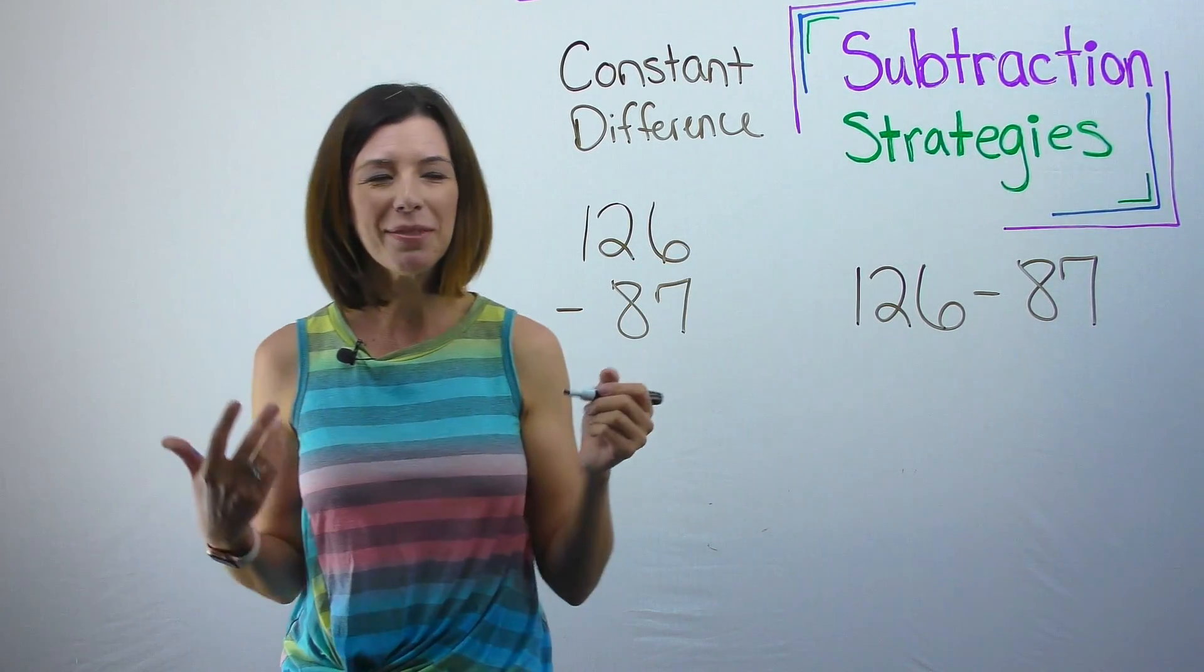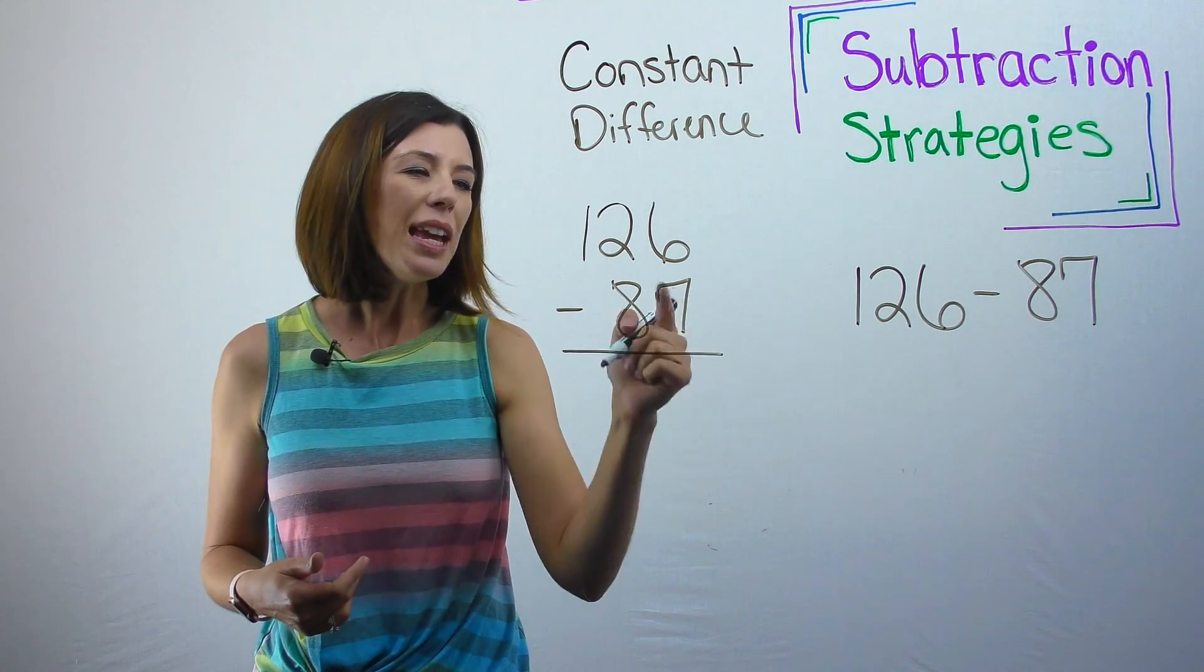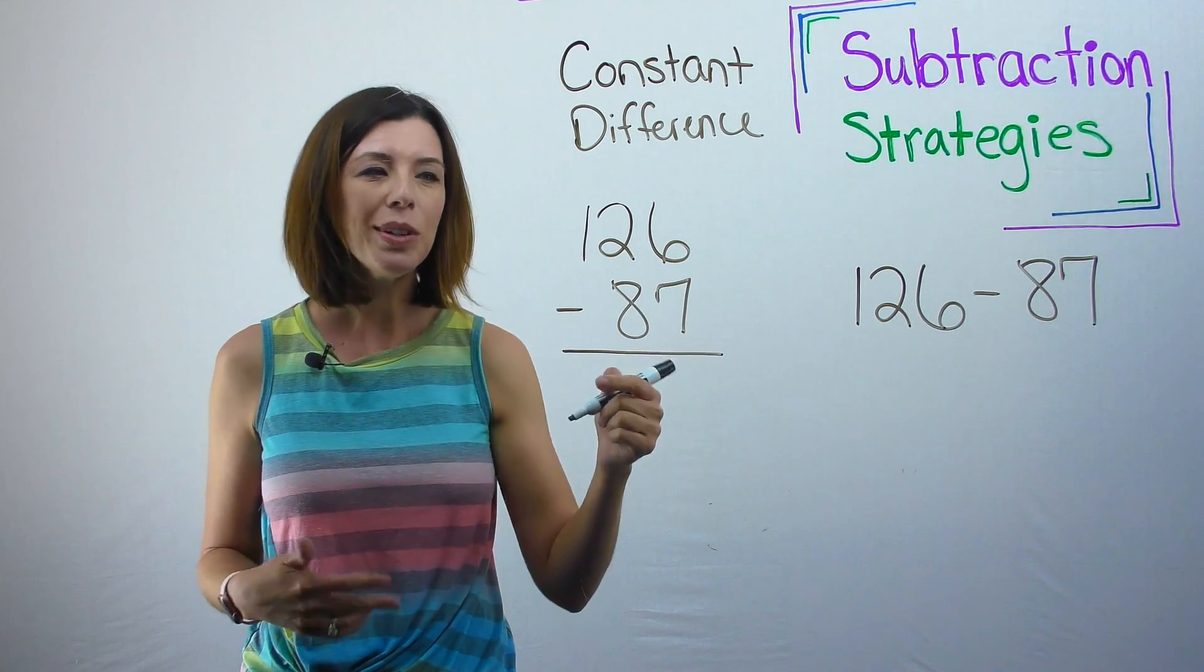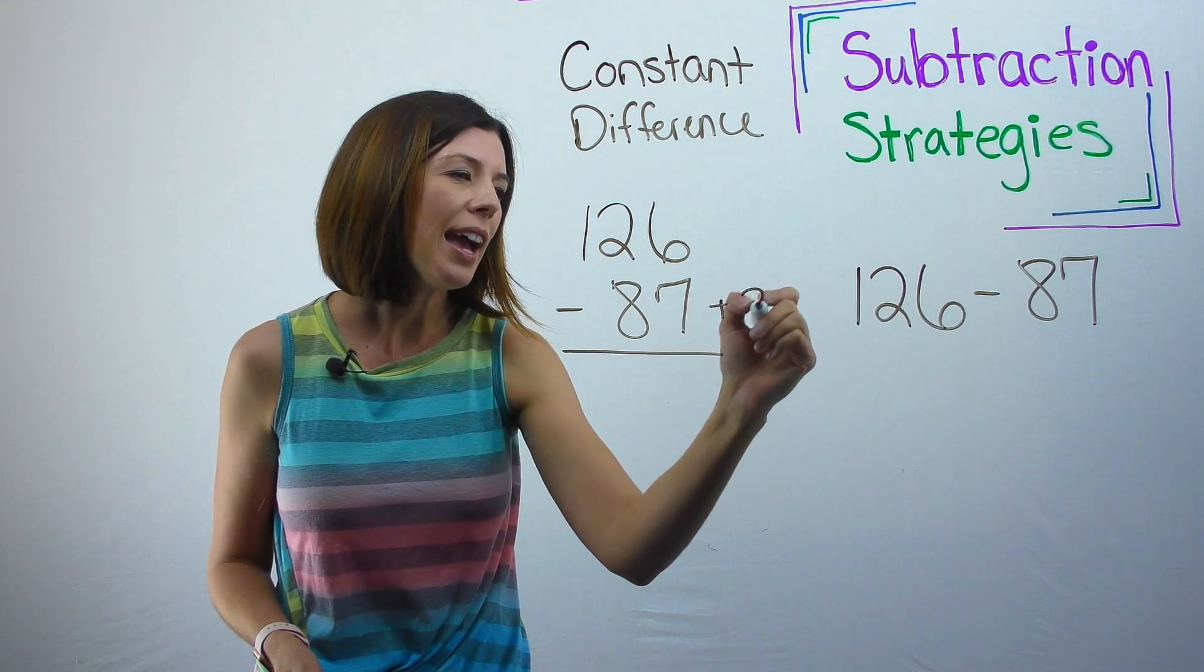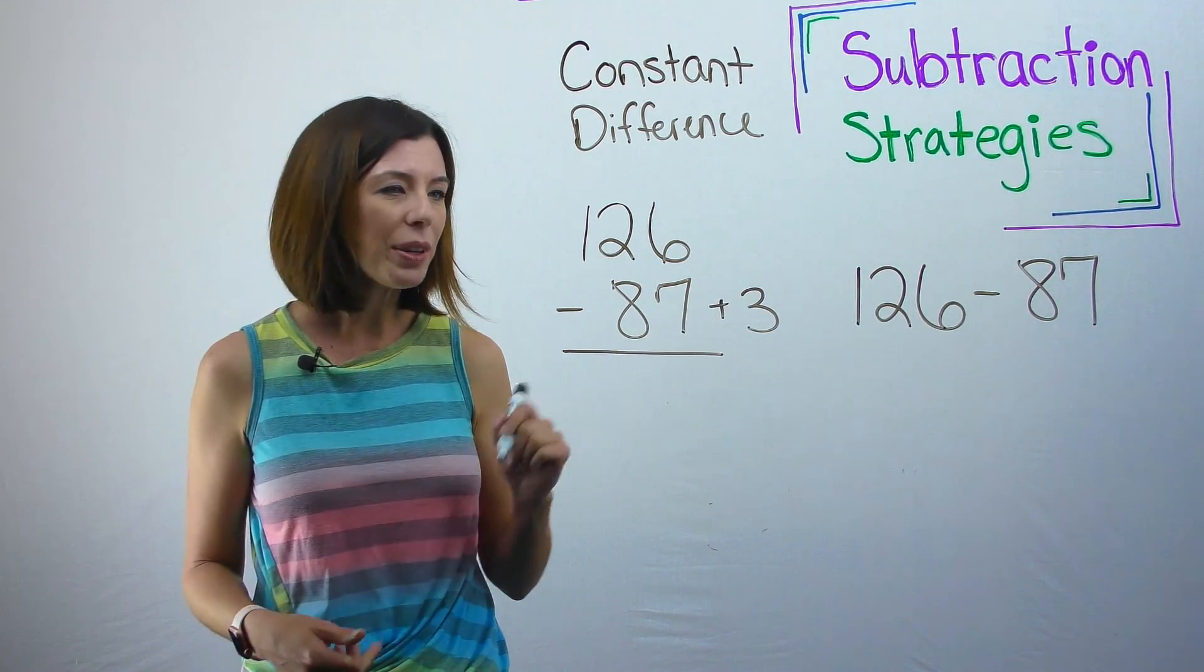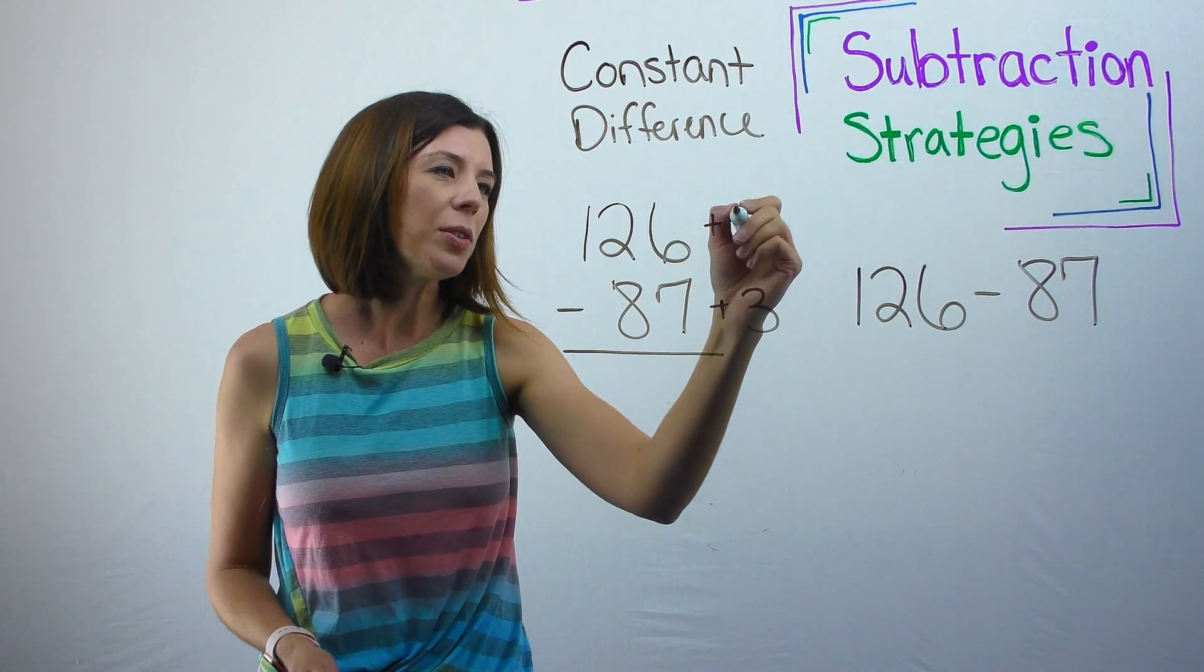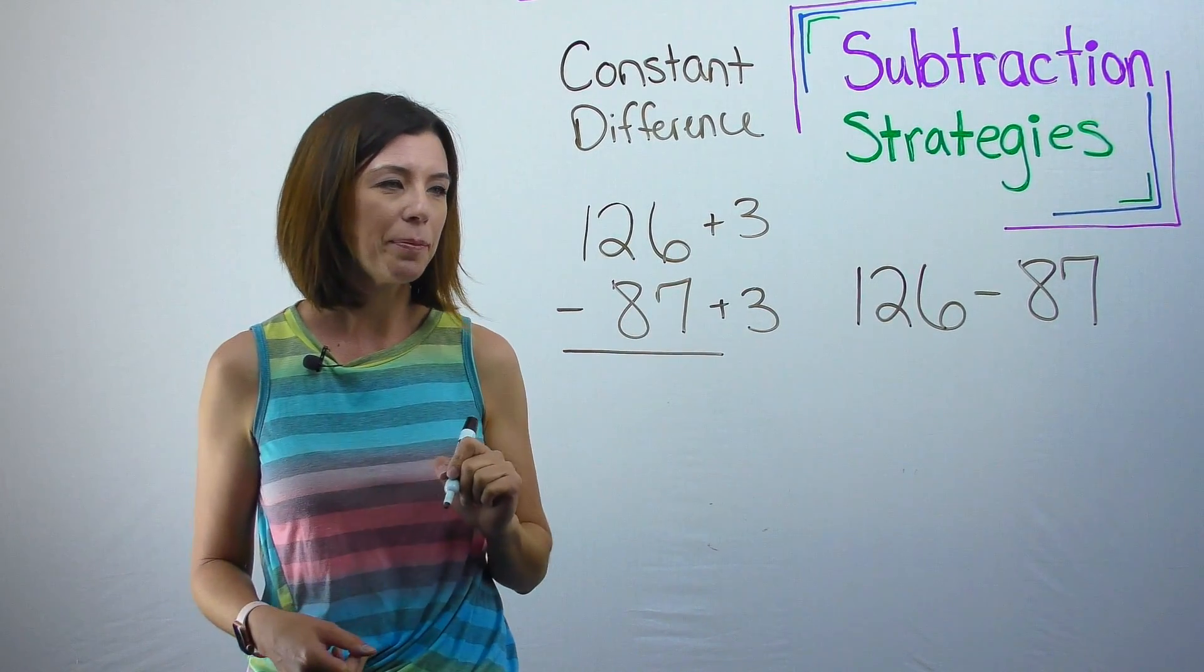And I think to myself, gosh, this is not very friendly. However, if this subtrahend was 90, man, that would make my life so much easier. So I'm going to go ahead and add three to that number. And I'm also going to add three to this number. Okay. So now my new problem is 129 minus 90.